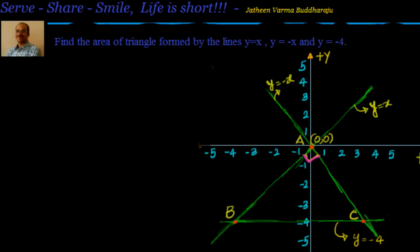So let's just understand what are the lines we have here. The lines are y equal to x, y equal to minus x, and y equal to minus 4.